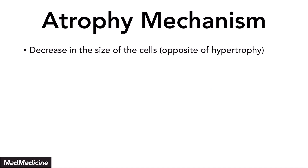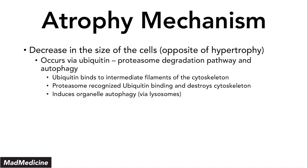Let's talk about the mechanism of atrophy. When you need to decrease the size of a cell — the opposite of hypertrophy — you use the ubiquitin-proteasome degradation pathway and autophagy. Ubiquitin binds to the intermediate filaments in the cytoskeleton, and then a proteasome recognizes ubiquitin and knows to destroy the skeleton of that cell. Once the cytoskeleton is destroyed, you will see organelle autophagy via lysosomes, in order to destroy the organelles present. This is the mechanism by which we counteract hypertrophy.